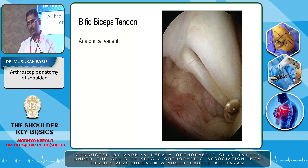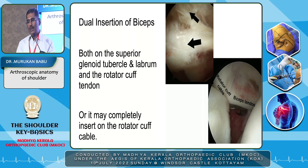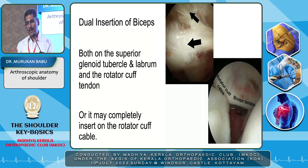How you identify it is by probing these two bands — there won't be any fraying or bleeding between the two tendons, so this is anatomical. Sometimes the biceps tendon can have a dual attachment: usually it is attached to the supraglenoid tubercle and the labrum, but one band can go into the rotator cuff tendon, or sometimes the whole tendon can go into the rotator cuff cable with no attachment at the supraglenoid tubercle. These are all anatomical variants.